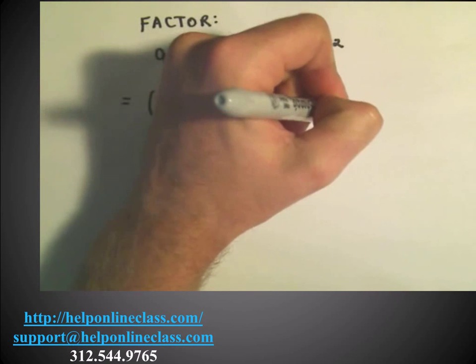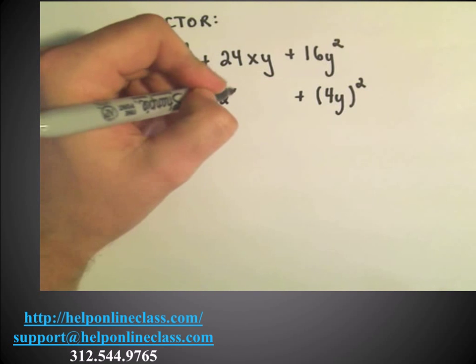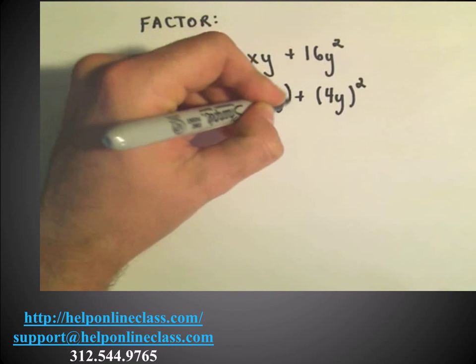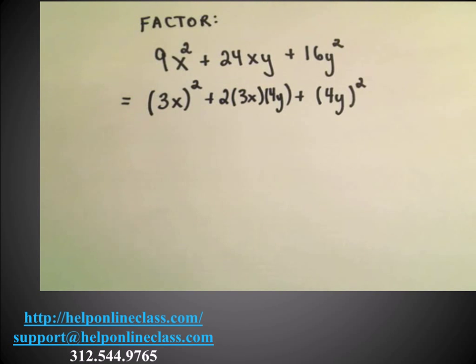Notice I could write that as 4y all squared. And notice now if I take 2 times 3x times 4y, if I multiply all this together, I'll get my 24xy back. And now we have this pattern, this formula we saw just a second ago.